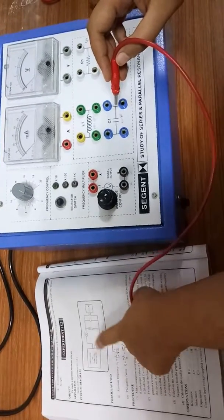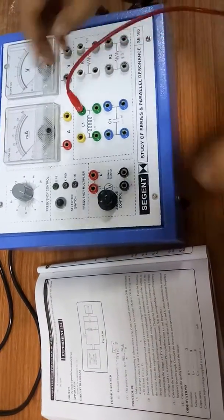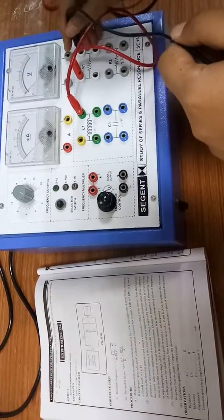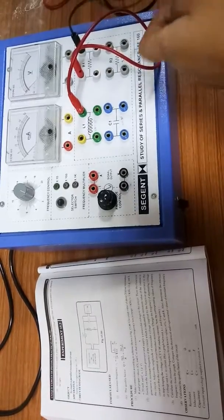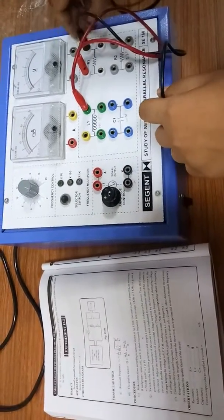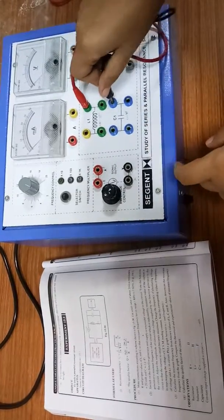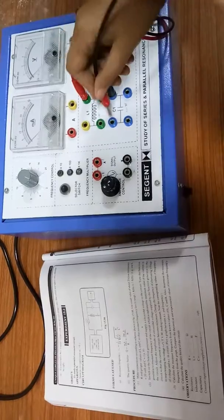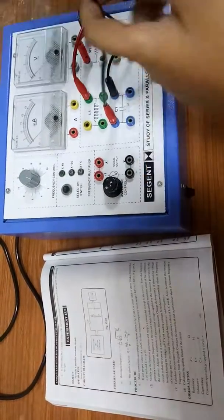Now we'll connect the second terminal of the resistance to the second terminal of the capacitor, and then the first terminal of the capacitor is connected to the first terminal of the inductor. Now we connect the voltmeter and ammeter.